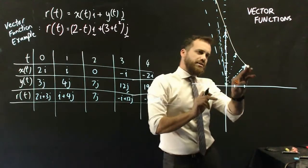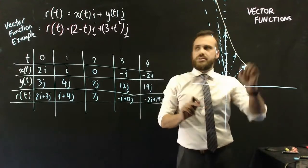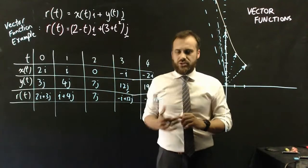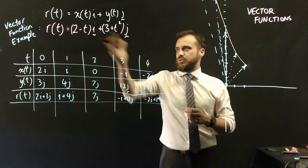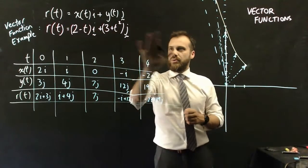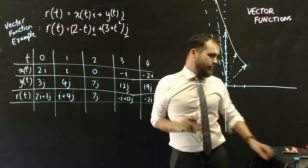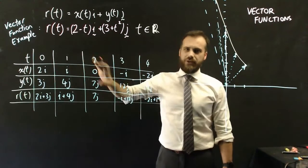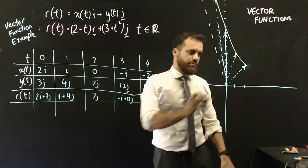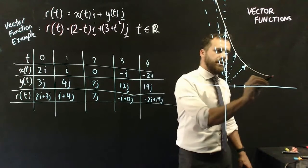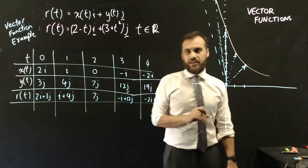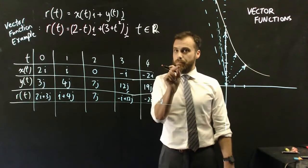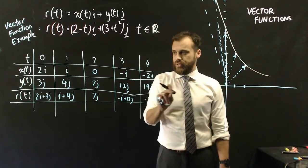We should consider whether to restrict to non-negative time or allow t to be any real number. If we let time be in the reals, we can go backwards in time, and the curve probably ends up being a quadratic that extends in both directions. I can find the exact equation.